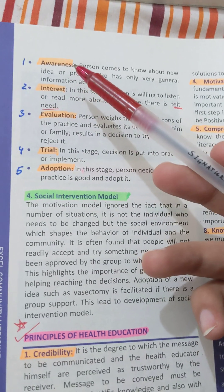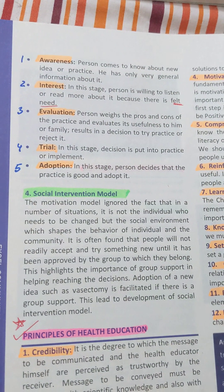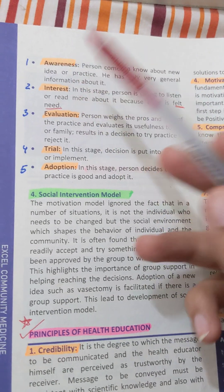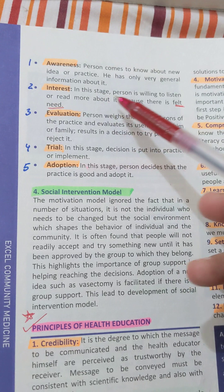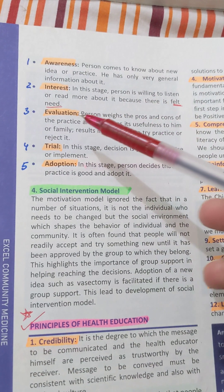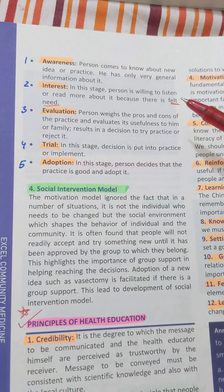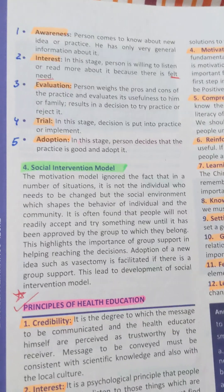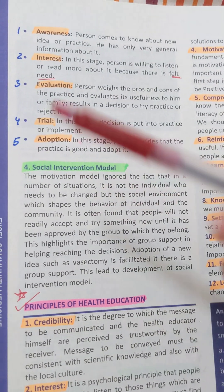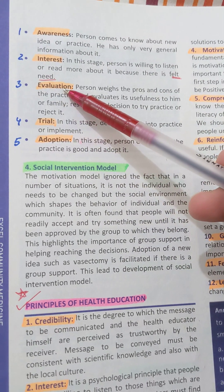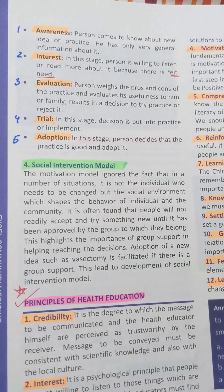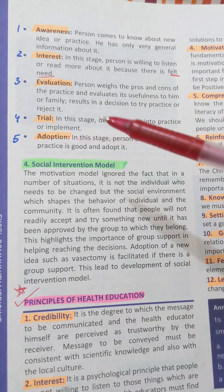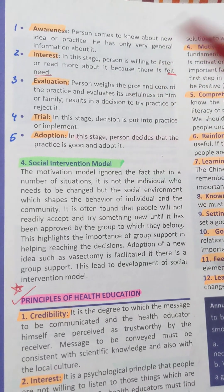In the awareness stage, the person comes to know about some new idea or practice and has only very general information about it. In the interest stage, the person is willing to listen or read more about it because there is a felt need. In evaluation, the person weighs the pros and cons of the practice and evaluates its usefulness to him or the family. This results in the decision to try, practice, or reject it.